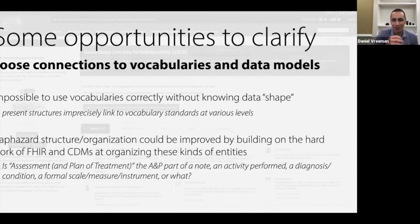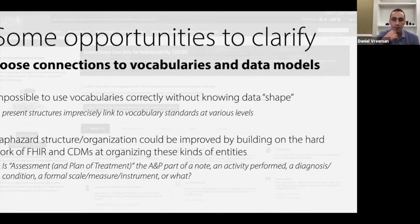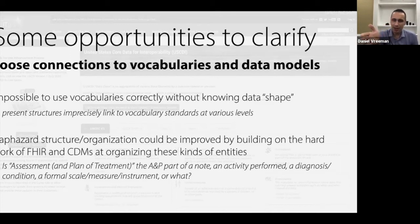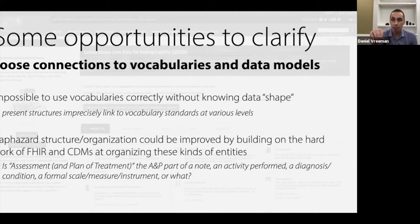My takeaway is that the somewhat haphazard structure of USCDI organization could be improved by building on the huge amounts of work that have gone into thinking about organization of health data by the FHIR community and by the various communities that have developed common data models, who have put a lot of work into thinking about these overall structures. This is the haphazard structure that I feel could be improved. The important point I want you to think about is this idea of data shape — what does the resource look like, what does the table in a common data model look like — and without knowing that shape, it is actually impossible to really figure out correctly how to use the vocabularies.